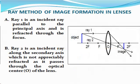How can we locate the image of an object formed by a lens? Lenses form images by refraction. To locate the image, use the following rays coming from point A on the object. Ray 1 is an incident ray parallel to the principal axis and is refracted through the focus. Ray 2 is an incident ray along the secondary axis which is not appreciably refracted as it passes through the optical center O of the lens.